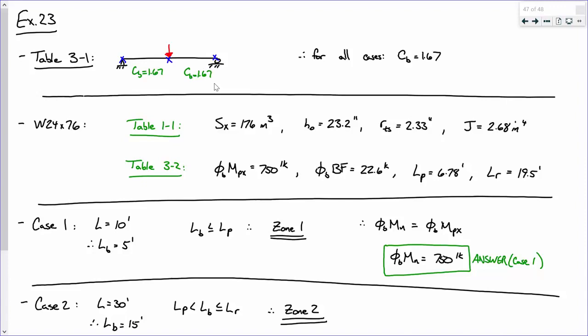Looking at C sub B value up, C sub B is always going to be 1.67, for these cases. So, it's just an easy constant that we can use.